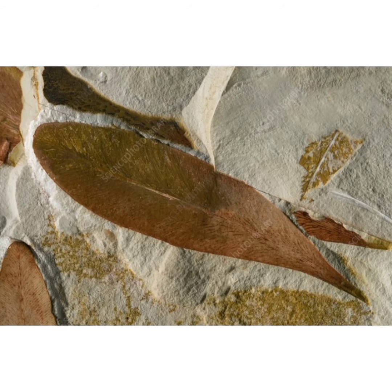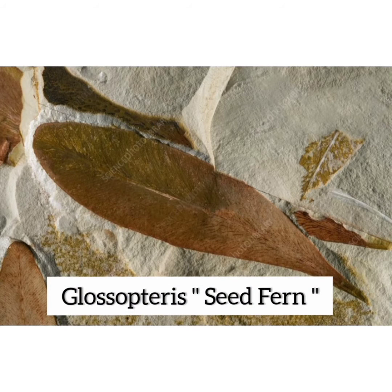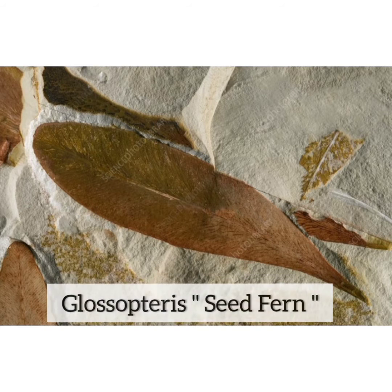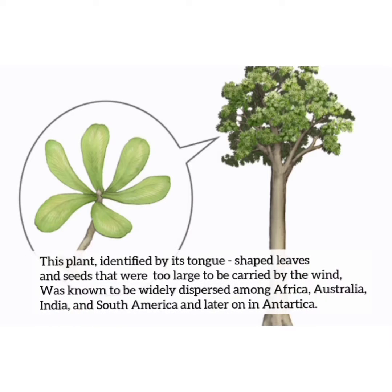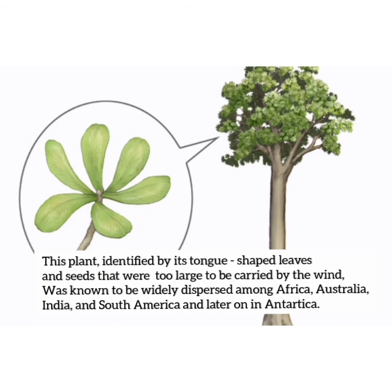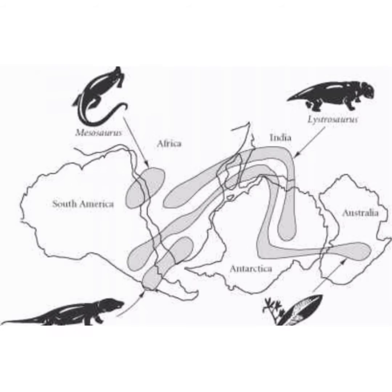Another example is Glossopteris, a seed fern, as evidence for Pangaea. This plant, identified by its tongue-shaped leaves and seeds that were too large to be carried by wind, was known to be widely dispersed among Africa, Australia, India, and South America, and was later found in Antarctica.